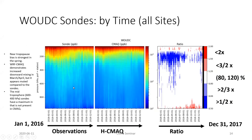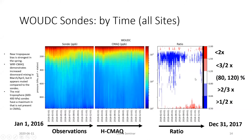Looking at the same sonde observations averaged across all sites as a function of time from January to January 2017, the sondes show a clear seasonal signal where the stratosphere is bringing ozone down lower in the observations than in the model. The model does represent some increased stratospheric contributions in spring, but not as far down as present in observations. When looking at the ratio, in March, April and May near the tropopause we really have underestimation. That underestimation extends down into the free troposphere during late spring but largely clears up as we move into summer.